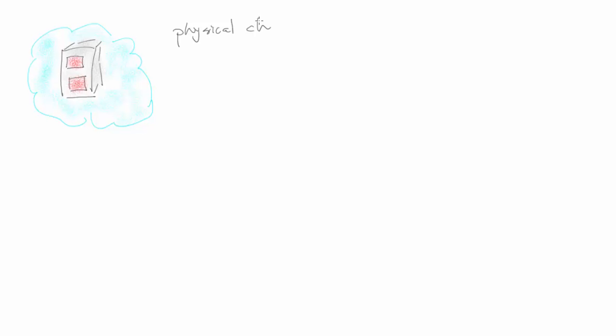Here we're drawing out a cloud with a server in it with two physical chips. On each one of those processing chips we have two cores — that is a dual-core, dual-chip, dual-processor server. So again, physical chips: two, and we have two cores per physical chip, which gives us a total of four cores.